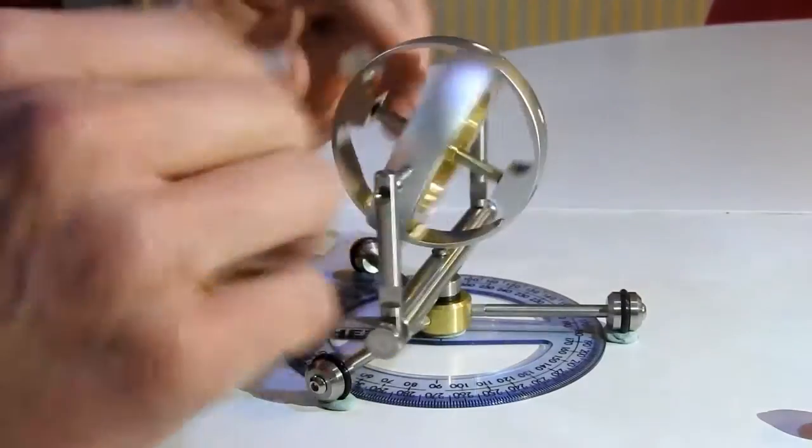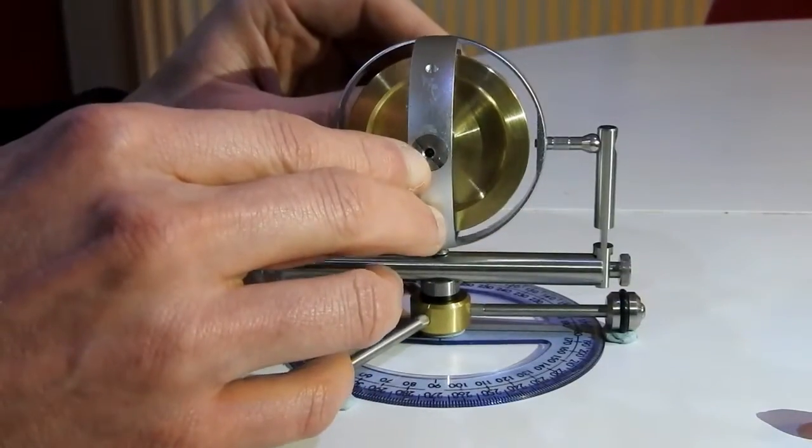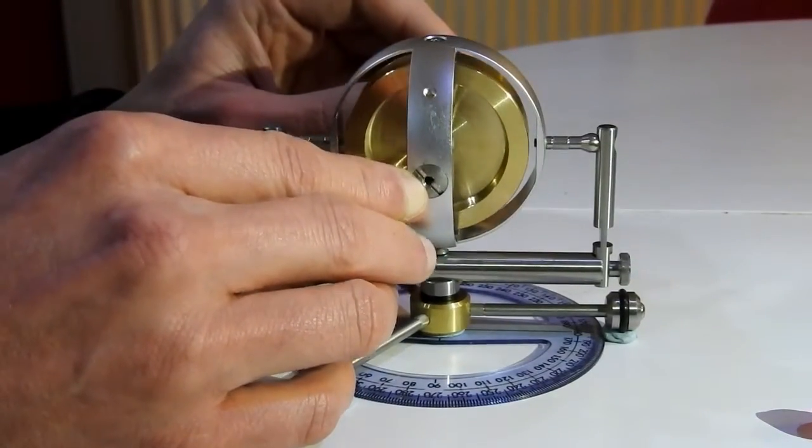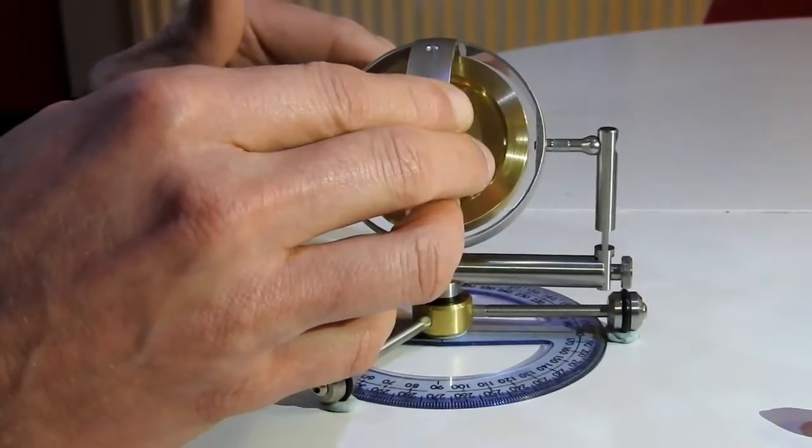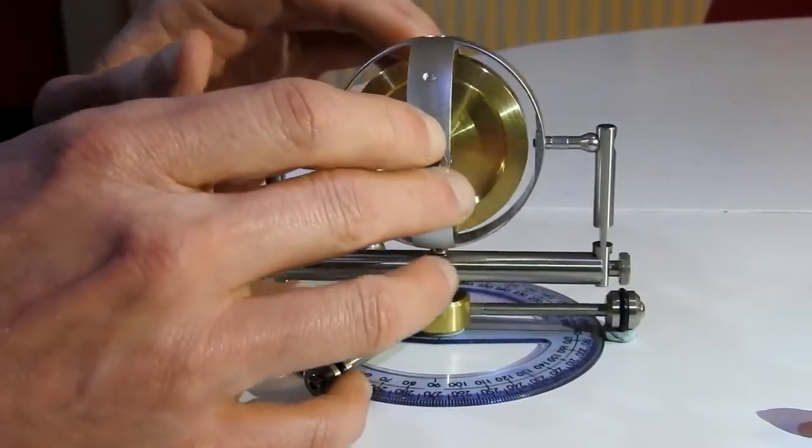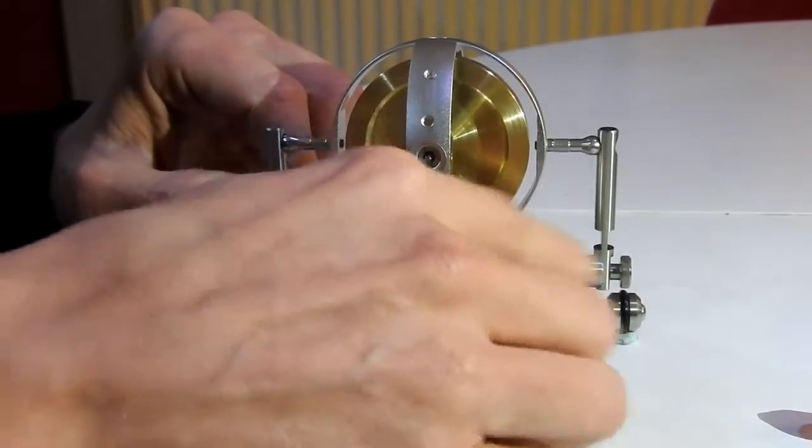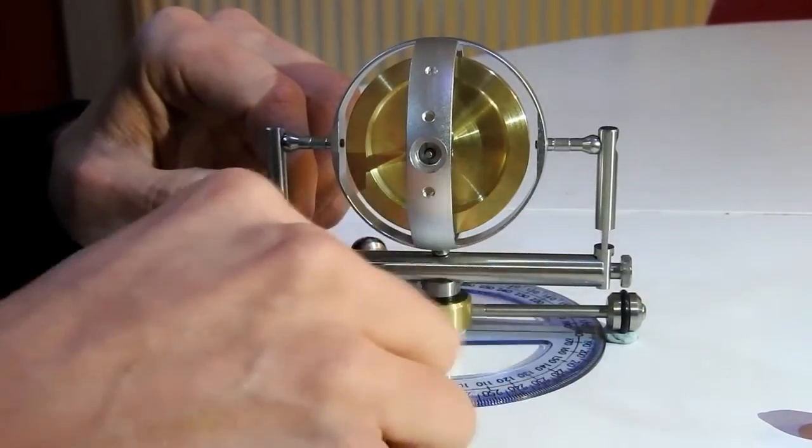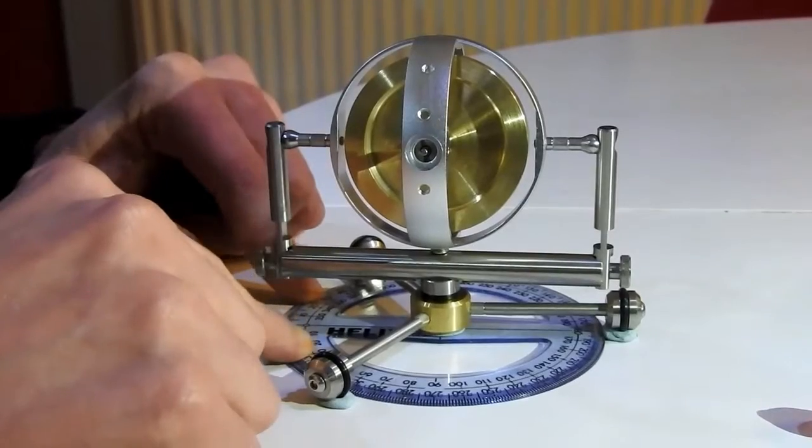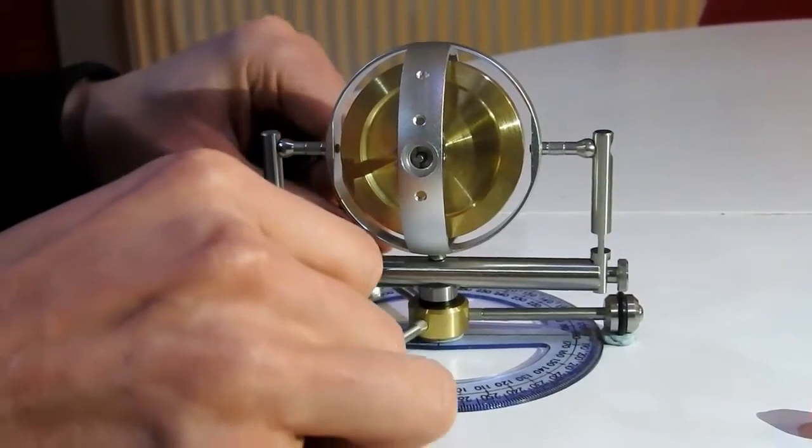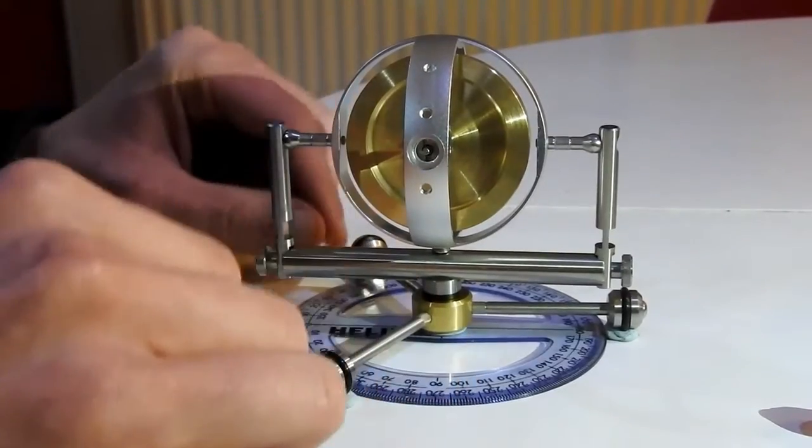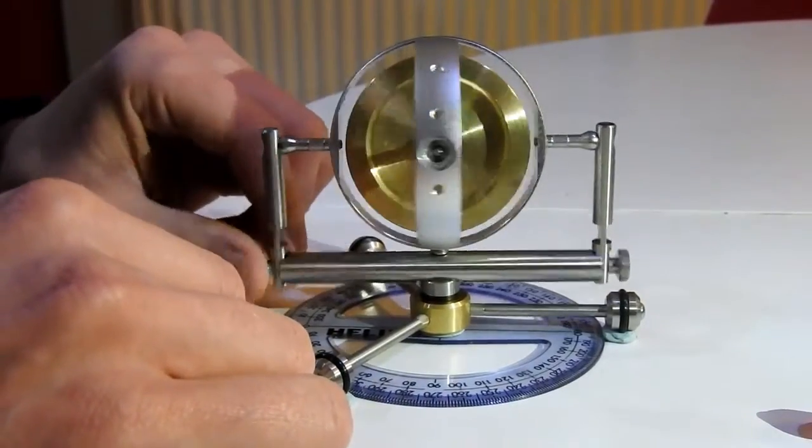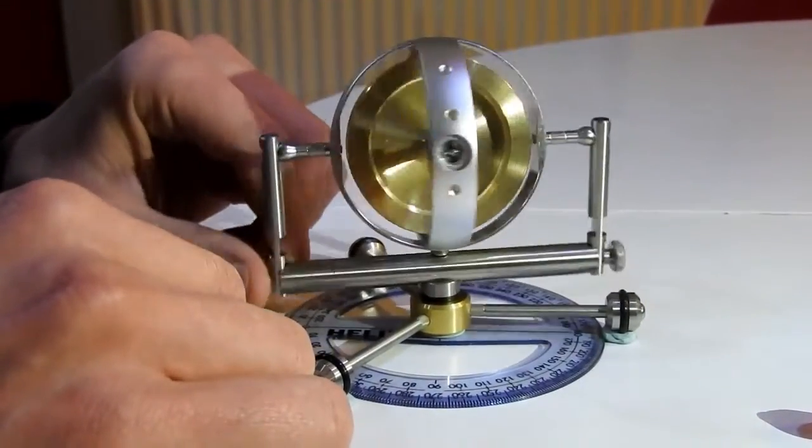Before I put this in, the extra weight caused this side to drop every time. And if it was over here, it would drop this way. So that's how I overcame that. I've attached the whole setup to a protractor, which I've blue tacked to the table. And I've blue tacked the actual frame to the table as well.